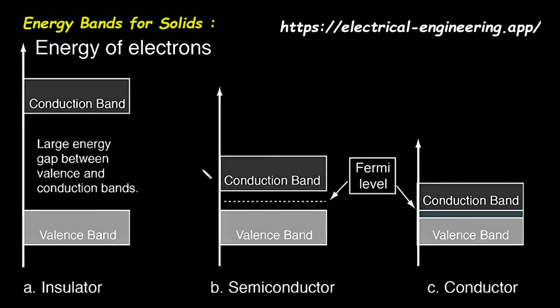In this video, we're going to explore a fundamental concept in physics and materials science: the energy of electrons in different types of materials. We'll be looking at a diagram that explains why some materials, like copper, conduct electricity so well, while others, like rubber, don't conduct it at all, and a special class of materials, like silicon, fall somewhere in between.